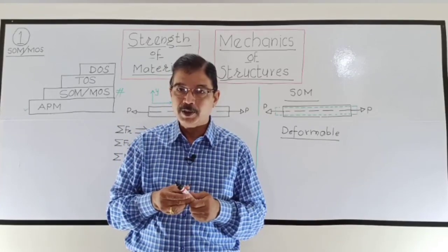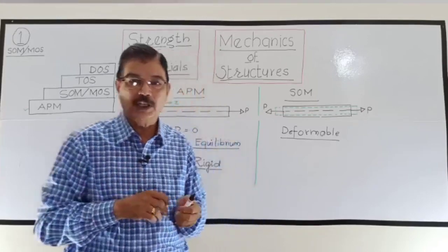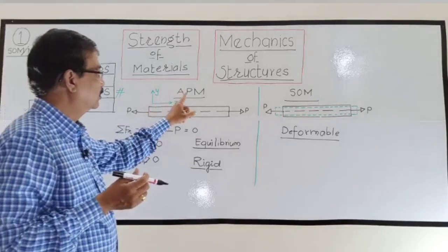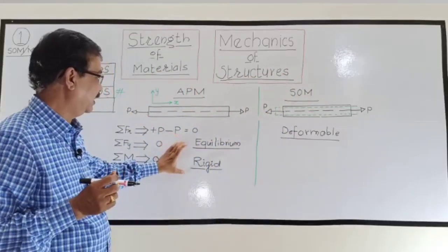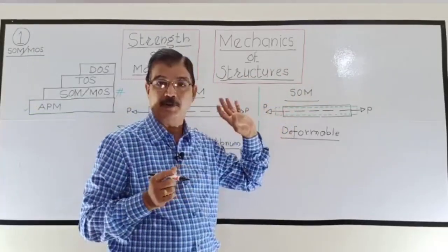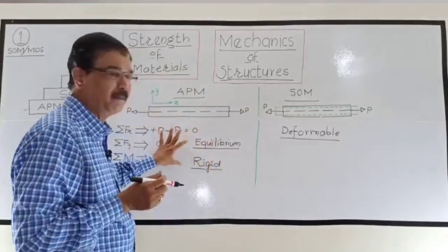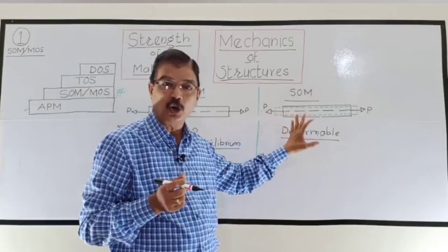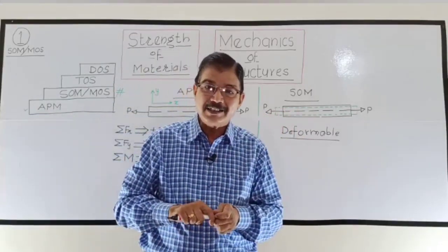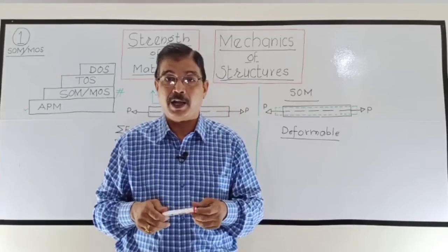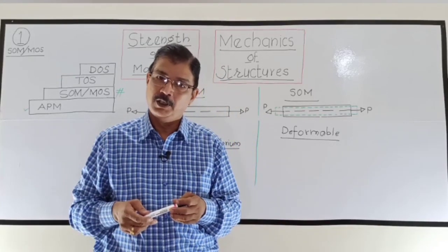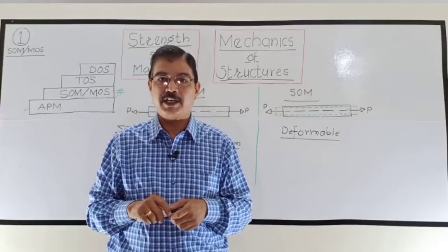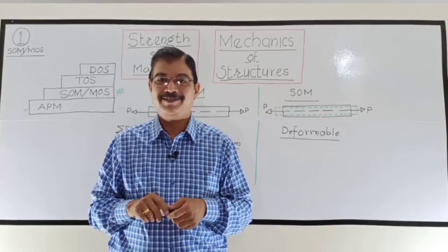To sum up what we saw in this lecture: first, the ladder of structure subjects — APM, then SOM/MOS, then TOS and Design. The most important difference: all bodies in APM were rigid, all bodies in SOM are deformable and elastic. In short, APM is the study of external effects on the body, and SOM is the study of internal effects produced in the body due to applied loads. In the next lecture we will start with the first unit — Moment of Inertia. Thank you.